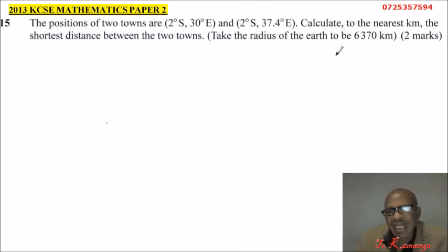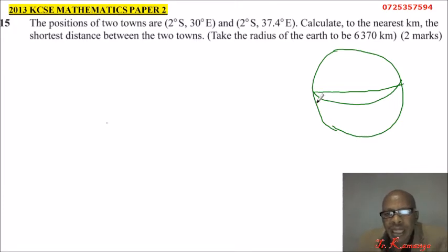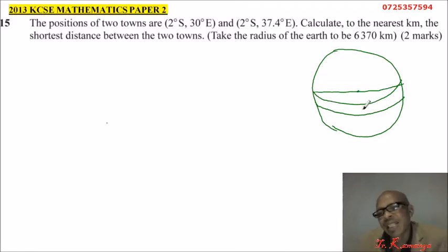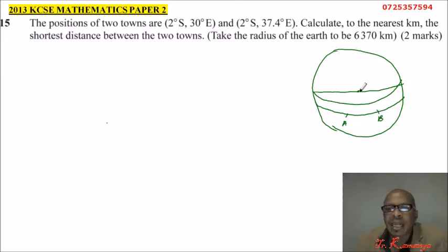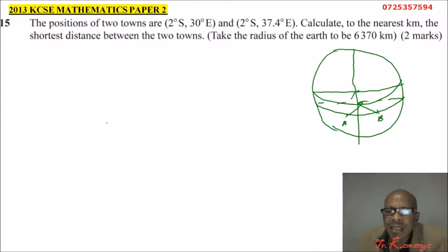Since we are revising, let's make a sketch. This is the earth, and this is the equator. We are told this point is 2 degrees to the south, so we place it there. If we take this as the center of the earth, then we can say this is our point A and this is our point B. The distance we are required to find is the distance AB.